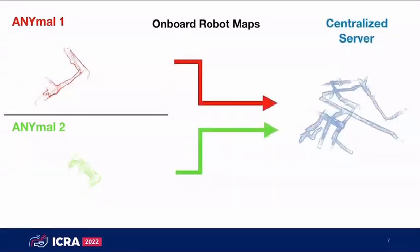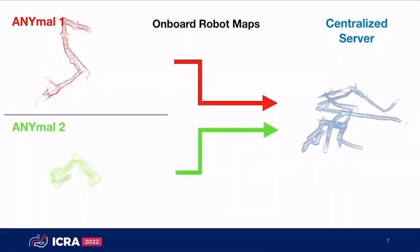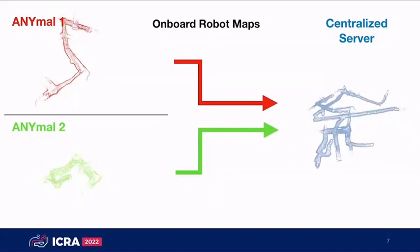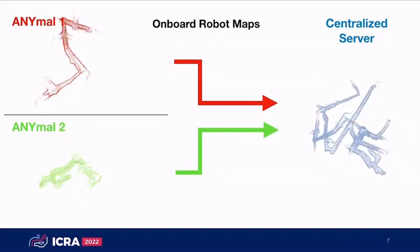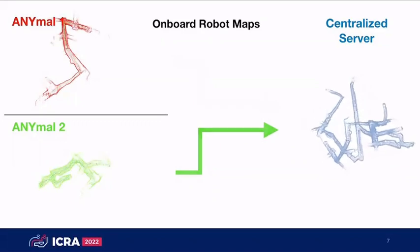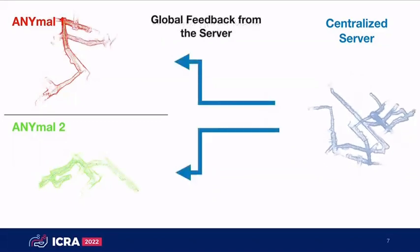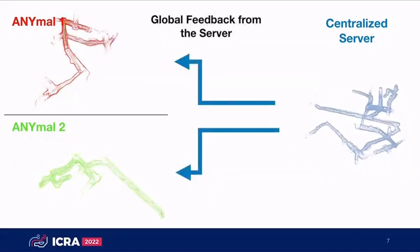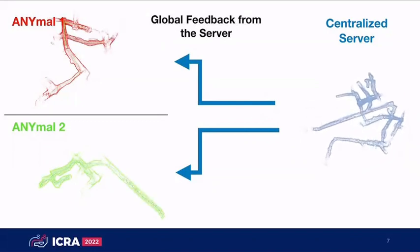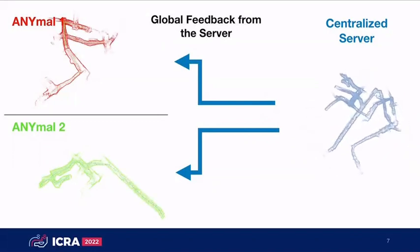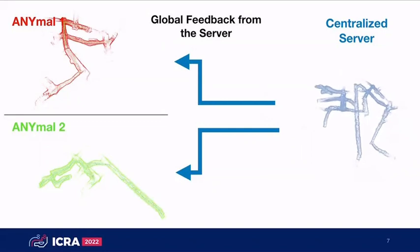We have multiple robots exploring individually in some unknown environment and they send back maps to a centralized mapping server, where we compute a global multi-robot map and perform global multi-robot loop closure. At some point we provide feedback back to the individual robots on how they can improve their onboard estimation.